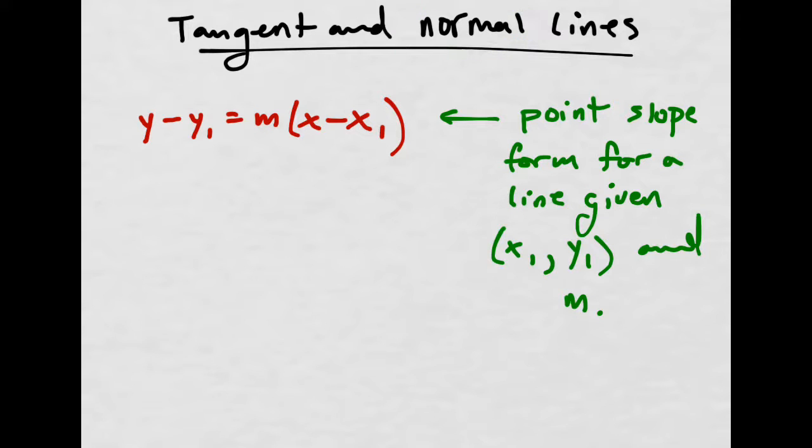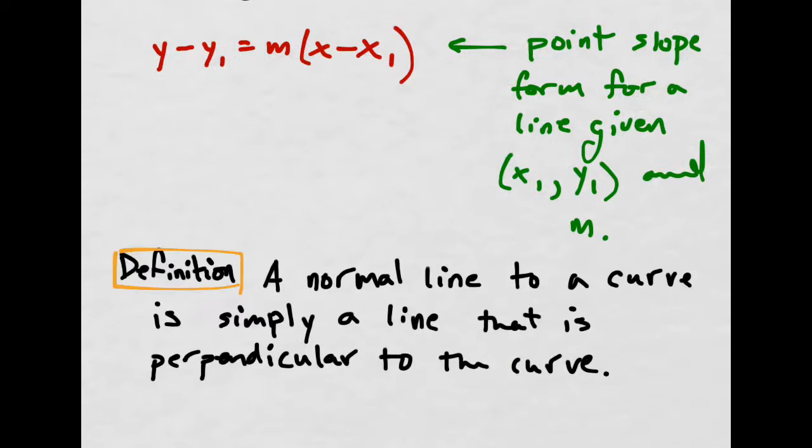Normal lines? Is it abnormal lines? No, normal. Normal has a specific definition. So a loose general definition of a normal line is, so like a normal line to a curve, is simply a line that is perpendicular to the curve.